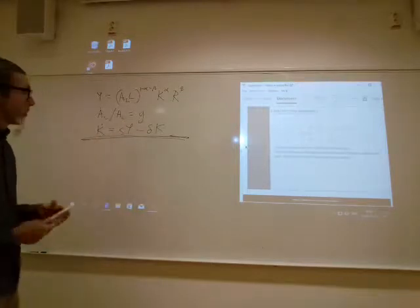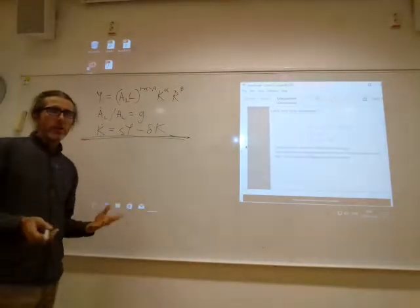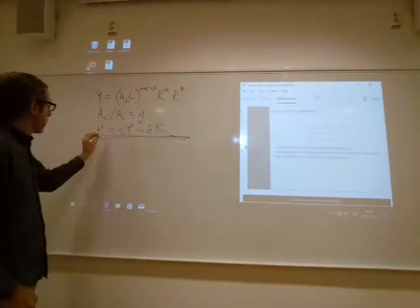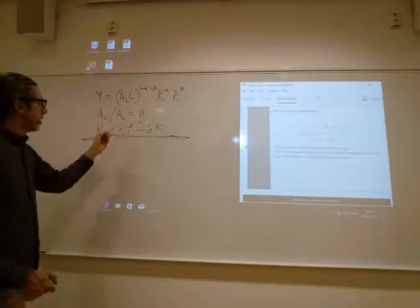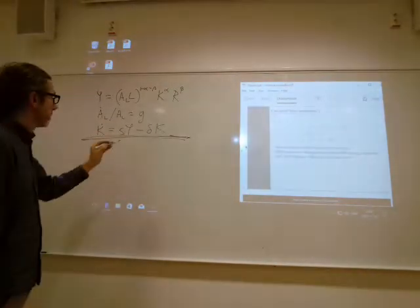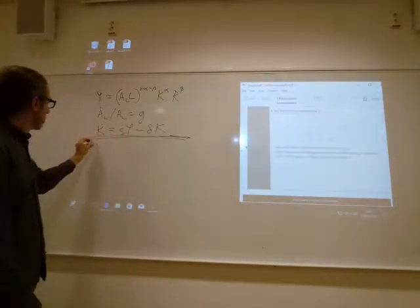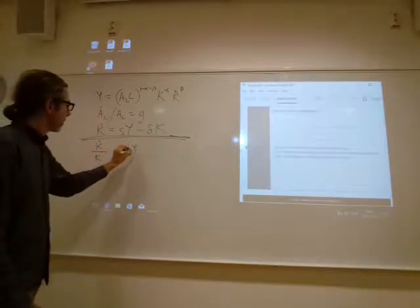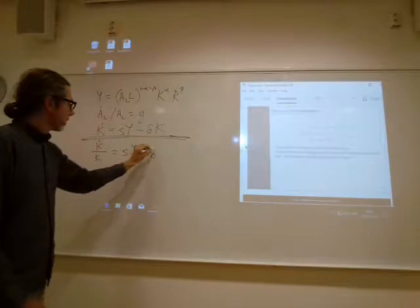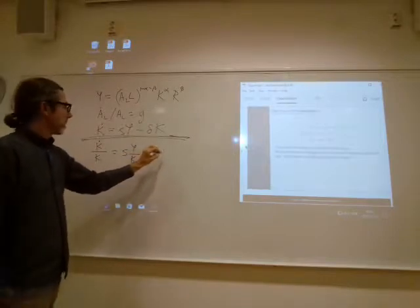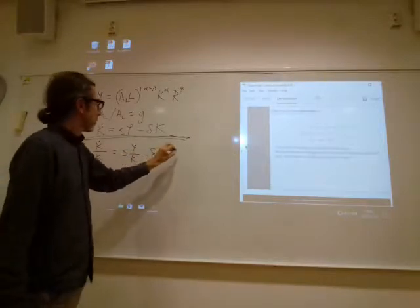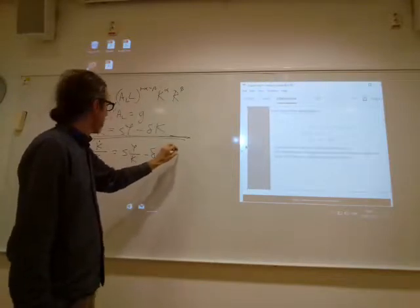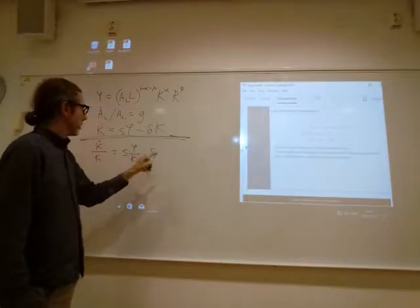Plus a bit more. So on balanced growth, anything that's growing is growing at a constant rate. And a constant rate means that, for instance, K dot over K is constant. So if we take this equation and divide by K, we end up with K dot over K is SY over K minus delta is constant. So let's call it, well, we can call it whatever, it's constant.